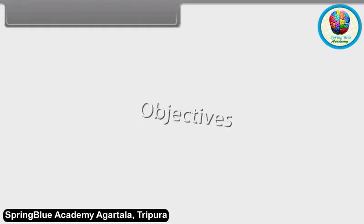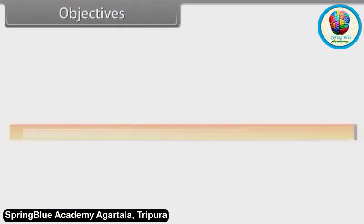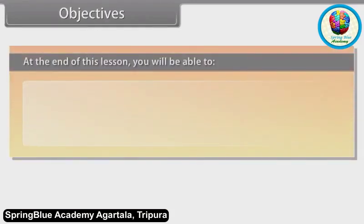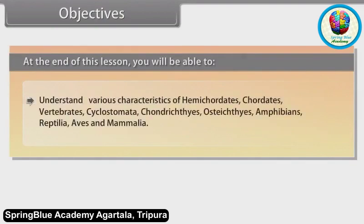Objectives. At the end of this lesson, you will be able to understand various characteristics of Hemichordates, Chordates, Vertebrates, Cyclostomata, Chondrichthyes, Osteichthyes, Amphibians, Reptilia, Aves and Mammalia.